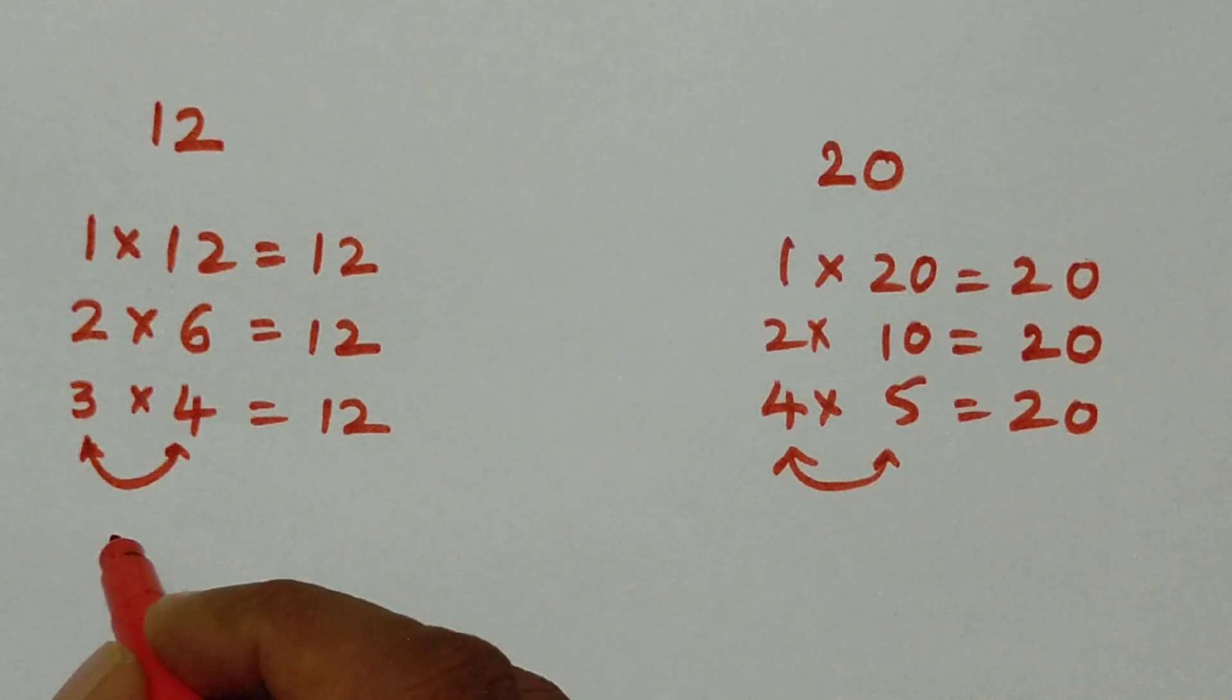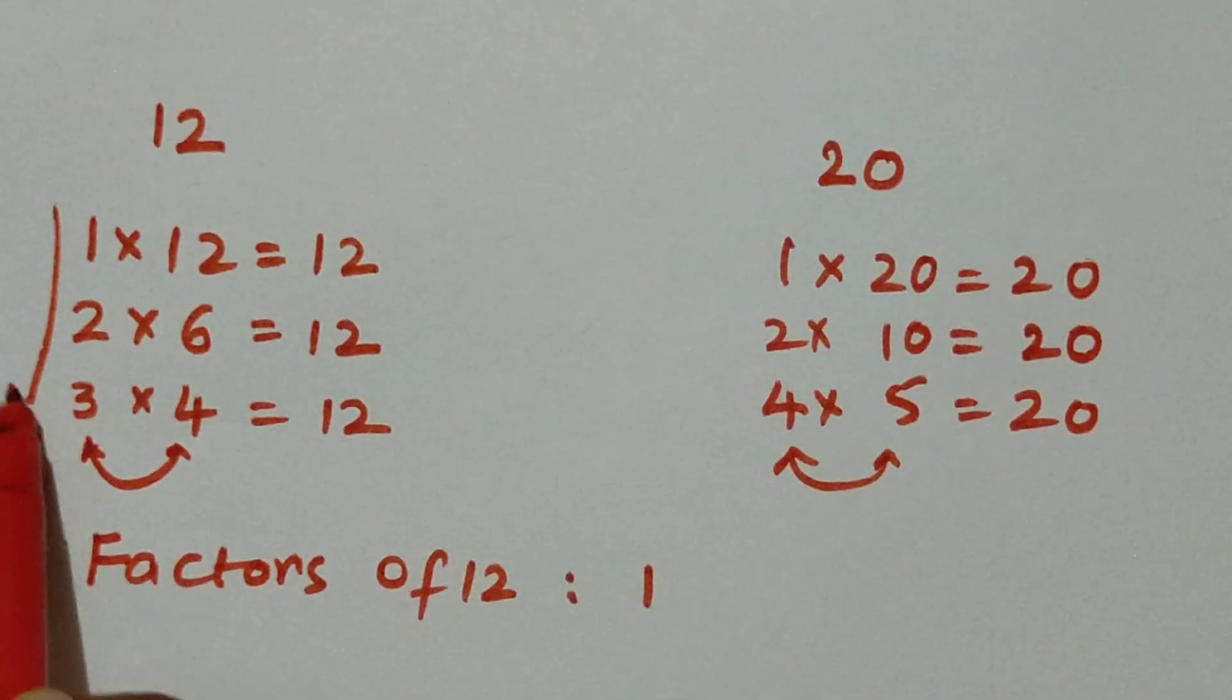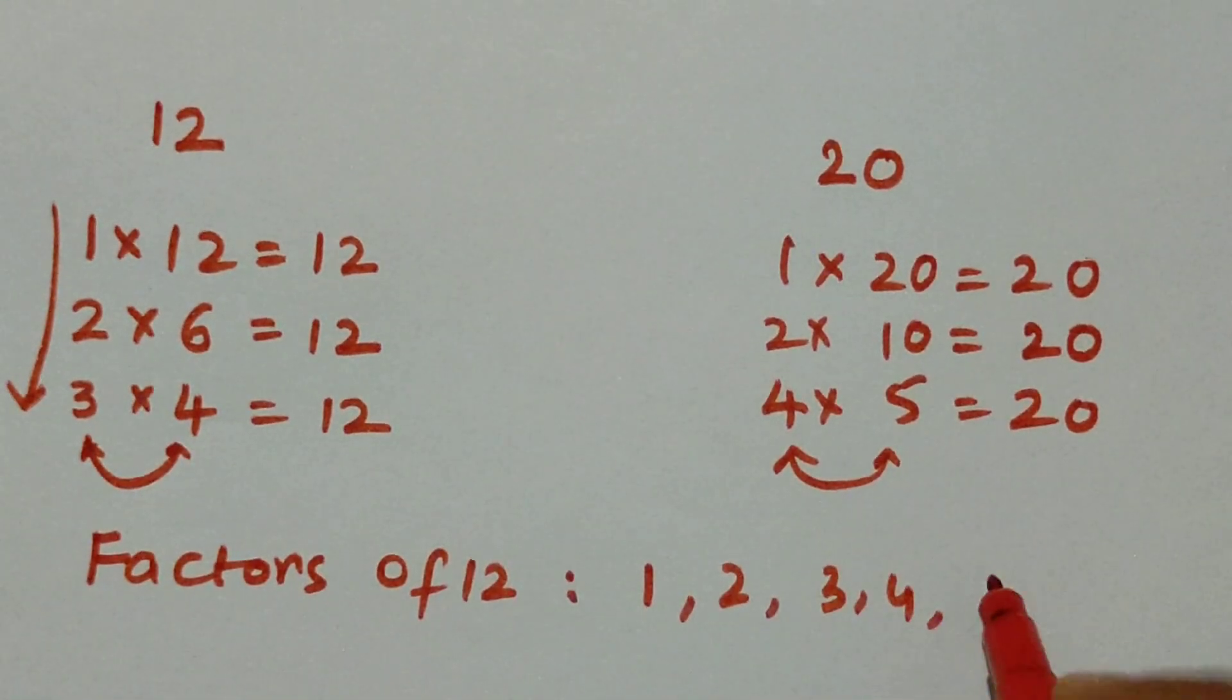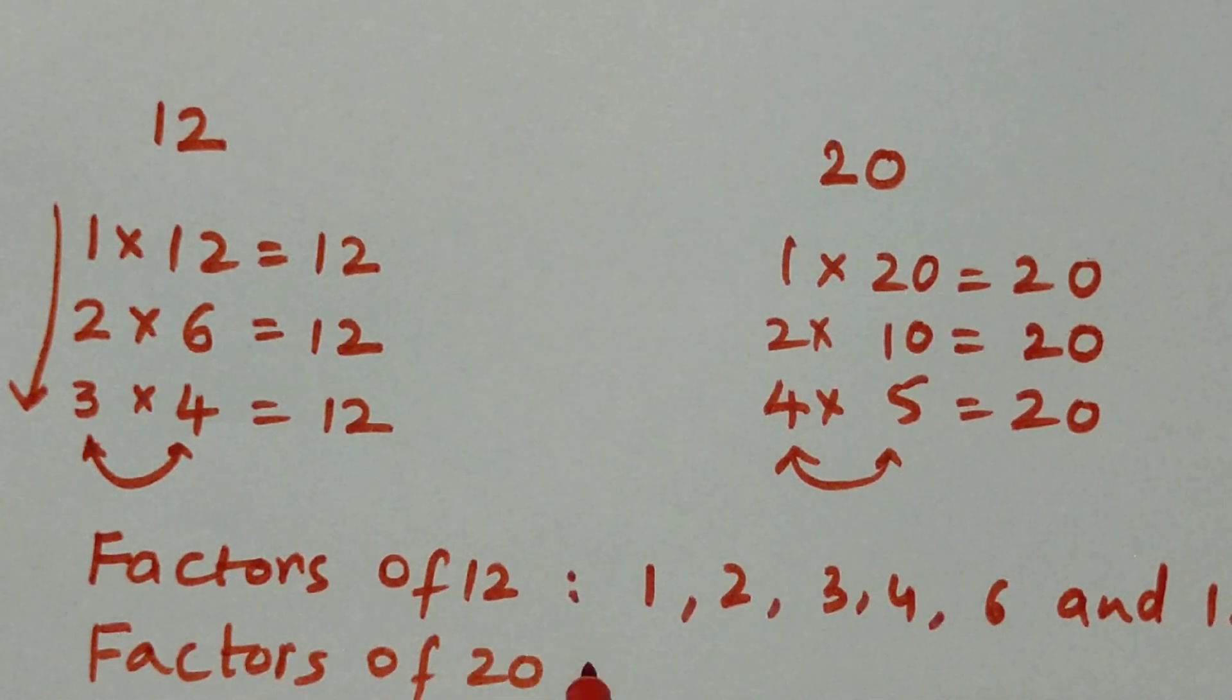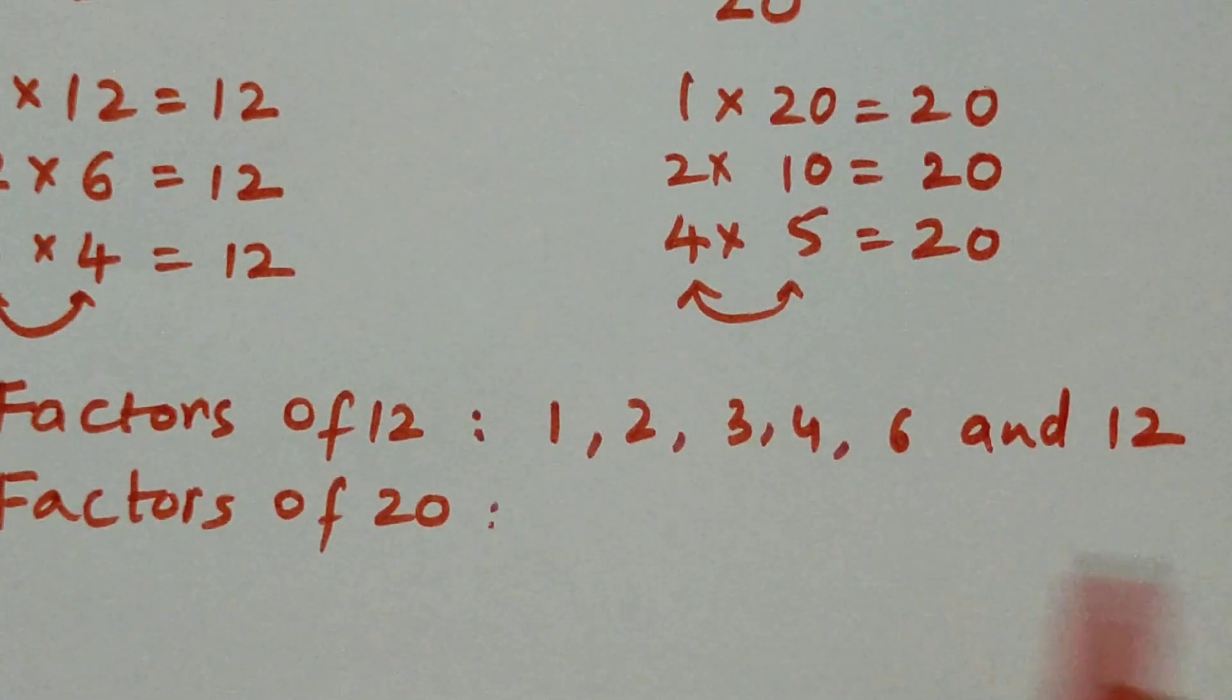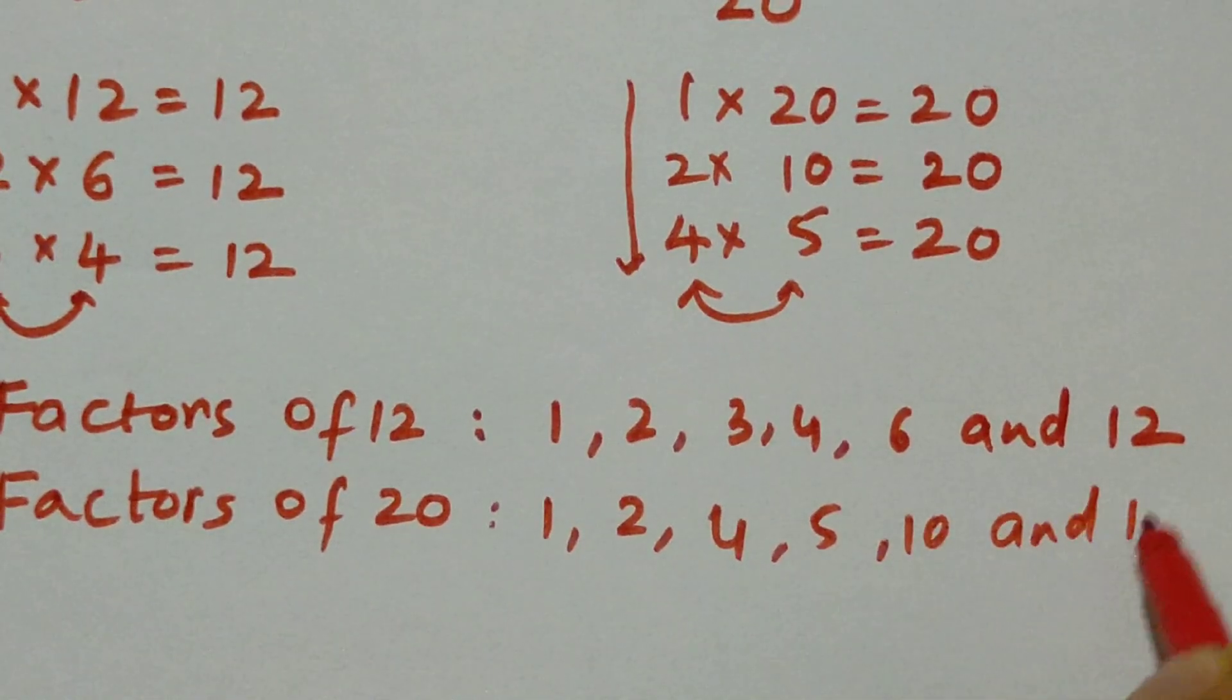Now we are going to find out the factors. I am going to write factors of 12: 1, you can see in the direction 1, 2, 3, 4, 6, 12. And again, I am writing factors of 20: 1, 2, 4 and then 5, 10 and 20.